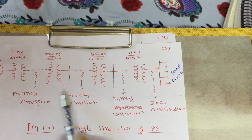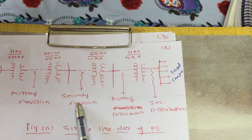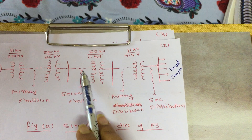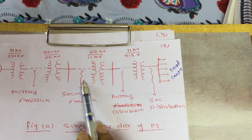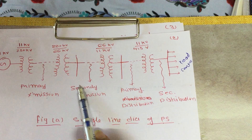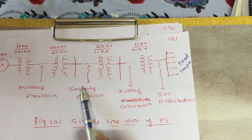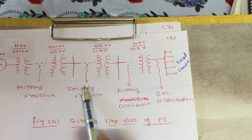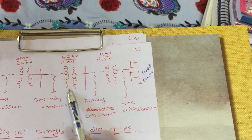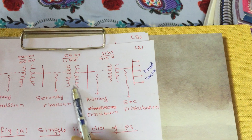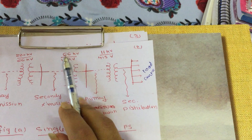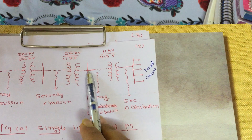Both the primary and secondary transmission sections come together in the transmission section, because no consumer is available at this stage. The step-up voltage is only to reduce I²R losses. Then another transformer converts 66 KV into 11 KV.